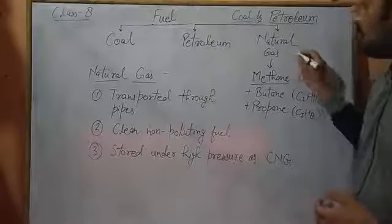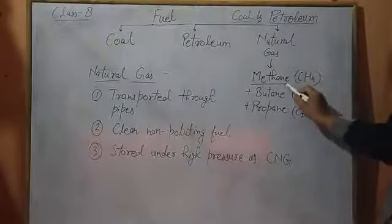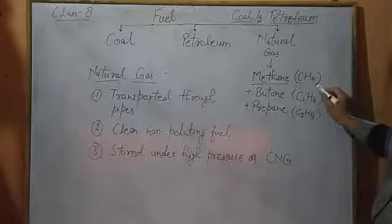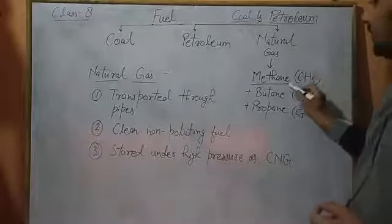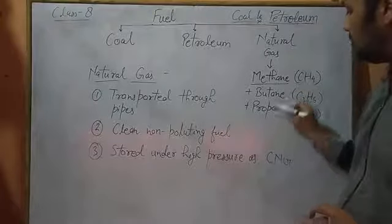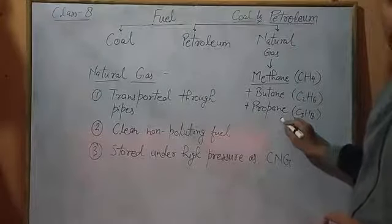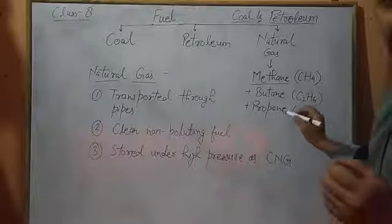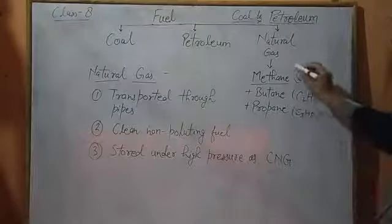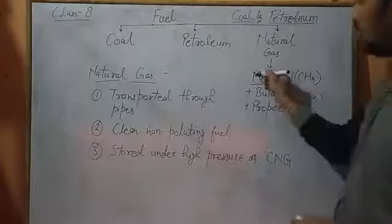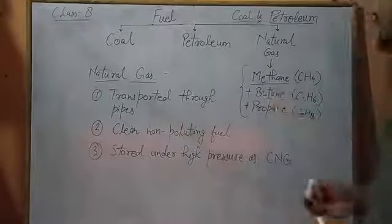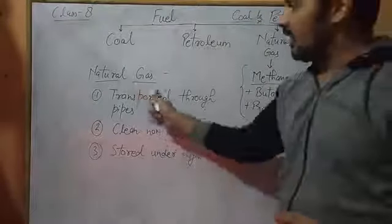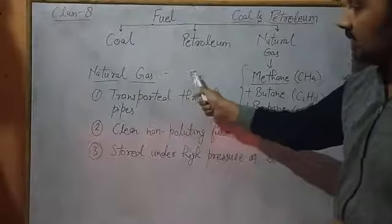The main component of natural gas is methane, with the formula CH4. Along with methane, small amounts of butane and propane are also present. All of these are gaseous compounds, and their combination is called natural gas.